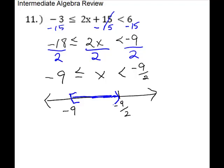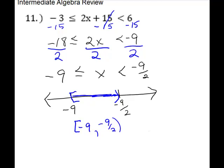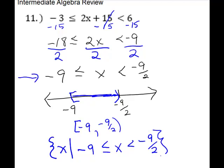For the other inequality symbol there is no equal, so it will be a parenthesis in the direction of your shading. For interval notation, take it directly from the number line: the interval from negative 9 — use the bracket, just like your graph — to negative 9 halves, and that one gets a parenthesis. For set builder notation, use your solution set symbols, then x and a straight line meaning 'the set of all x such that,' followed by your rule: negative 9 is less than or equal to x, which is less than negative 9 halves.